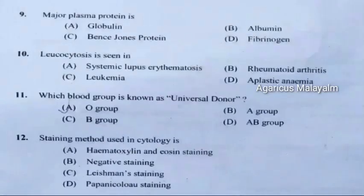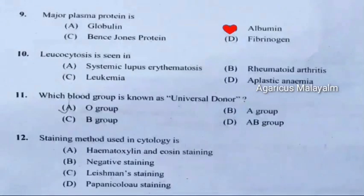Ninth question: Major plasma protein is. Correct answer is Option B: Albumin.